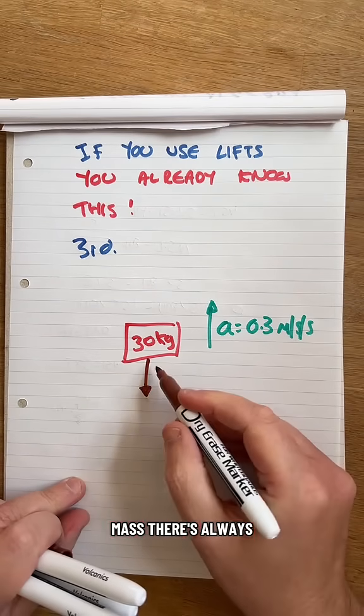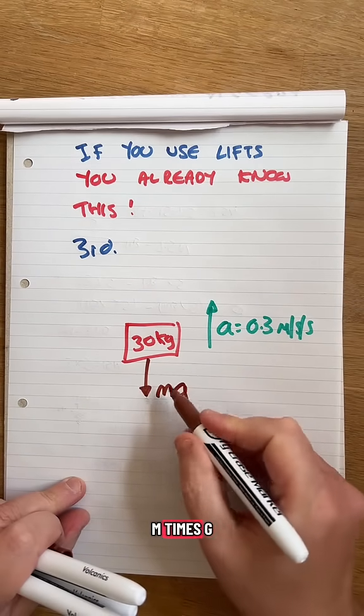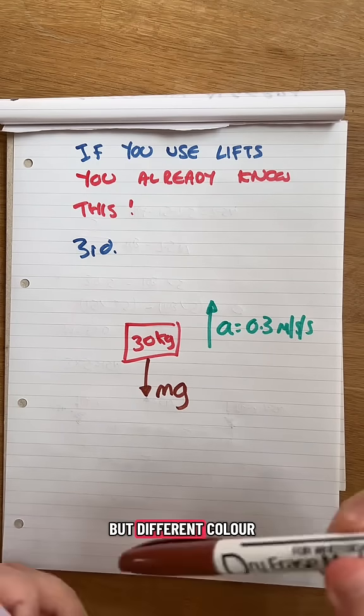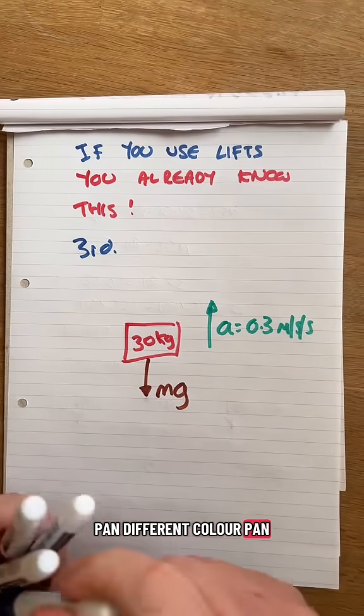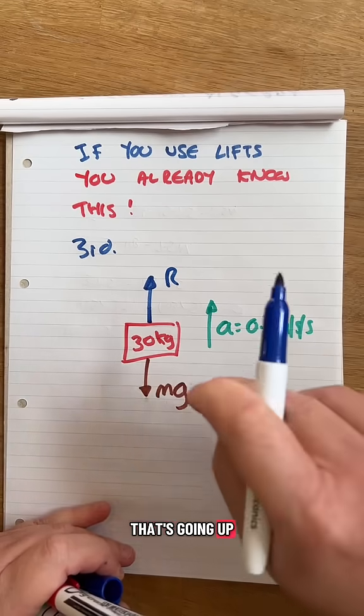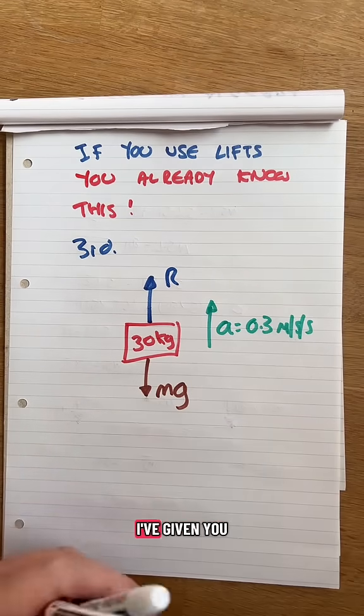So there's my mass. There's always going to be a weight, force of gravity. M times G. M is mass, G is gravity. There's going to be a reaction. There's something going up. A different colour pen. That's coming down. It's going to be going up because there's an acceleration. I've given you that.